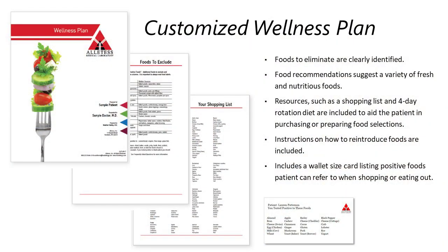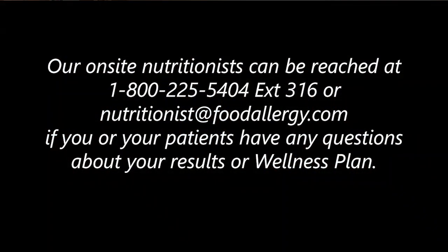We also offer a wellness plan, which explains most of what I've just said and more. It gives you recommendations about the big foods that are very common in this country, like gluten, dairy, and eggs. The wellness plan provides a customized 4-day rotation diet of what we suggest you eat while avoiding your positive foods for the 10 weeks. It also gives you a shopping list and a little wallet card, so if you're going out to dinner or to the grocery store, you can just bring the wallet card and know which foods to avoid. We're always available by telephone or email to answer any other questions you may have. Thank you.